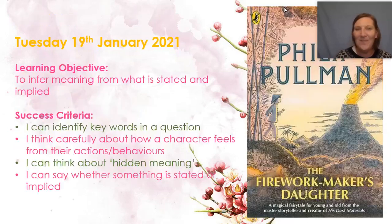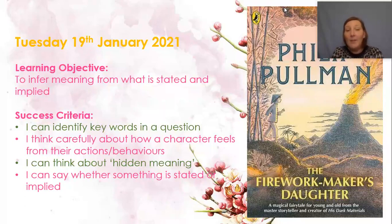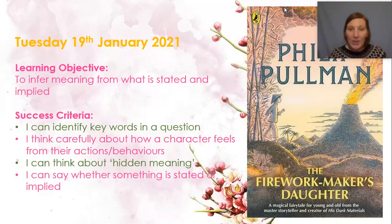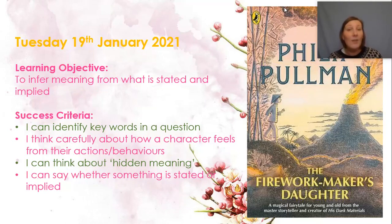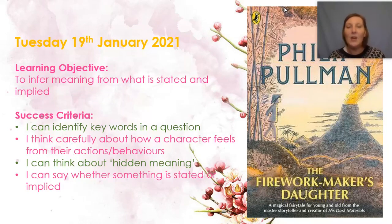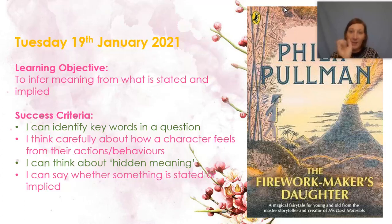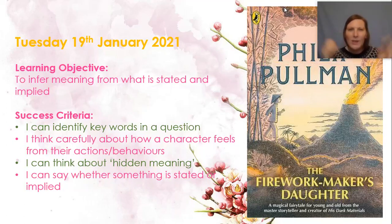Welcome back. Let's start our lesson today. Our objective is to infer meaning from what is stated and implied — that means using the evidence, putting it together and working out what is actually happening. To be successful, you're going to identify keywords in the question, think carefully about how a character feels from their actions and behaviours, think about the hidden meanings — the things that are not stated — and be able to say whether something is stated, meaning the evidence is in the text and we can retrieve it, or implied, meaning we need to think about what the writer is trying to tell us.